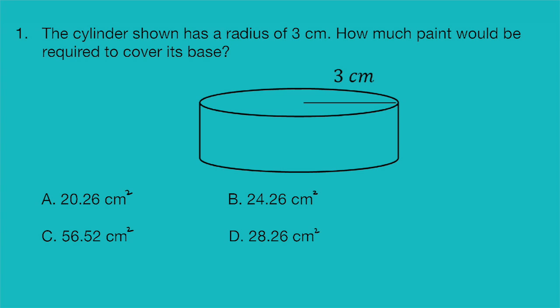Okay, so it's clear that we have a radius of three. They give us the diagram for the cylinder as well. And they're asking us how much paint would be required to cover its base. And so the base of the cylinder is basically a circle. And so they're basically asking us to find the area of a circle.